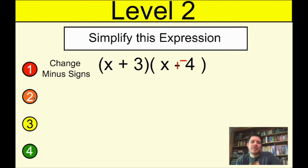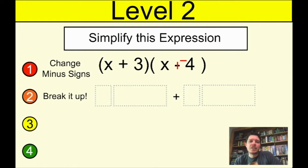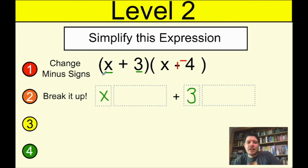Step number two is implementing the idea that we're doing two different distributions. What you're going to need to do on your homework is show that you can break this one expression up into two expressions being added together. The first thing in the first parentheses goes in the first spot, and whatever's in the second spot goes after the plus sign.